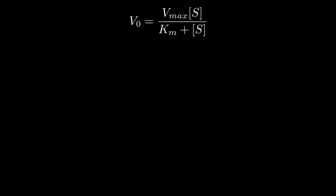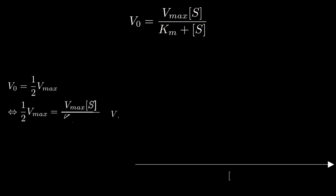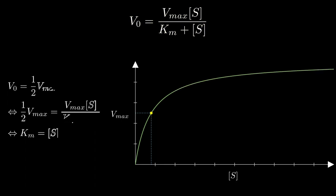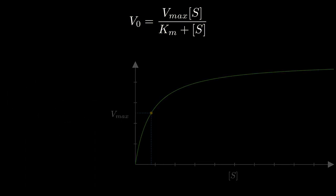Another interesting mathematical property of the Michaelis-Menten equation is that when V0 is equal to exactly half of Vmax, Km is numerically equal to S concentration. We can arrive at this conclusion by some simple algebra.